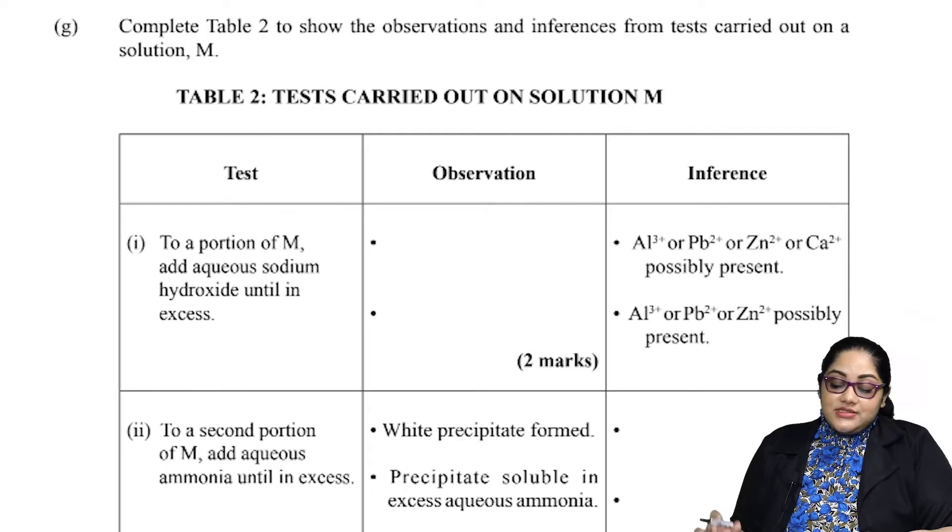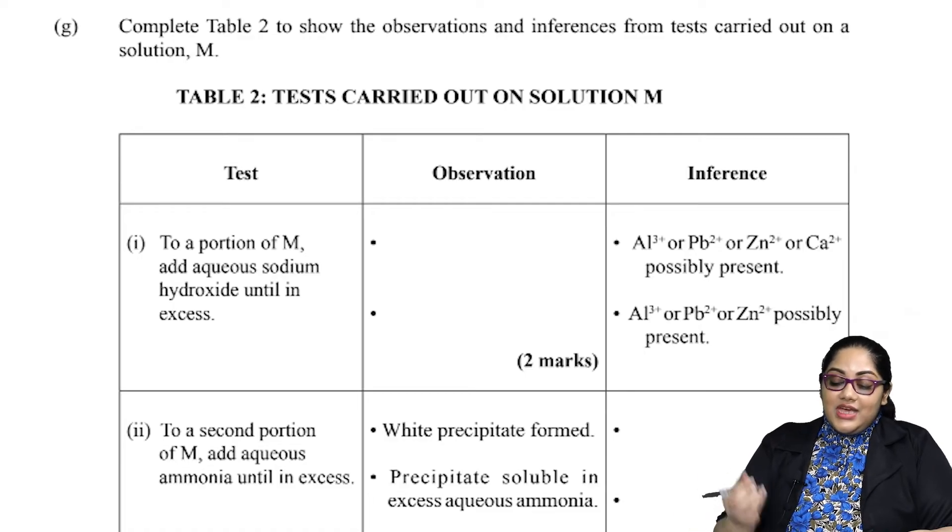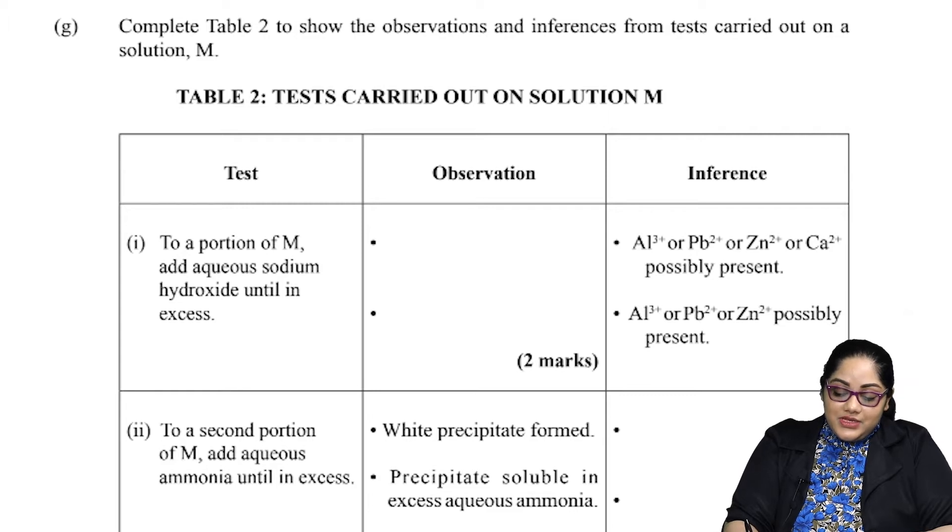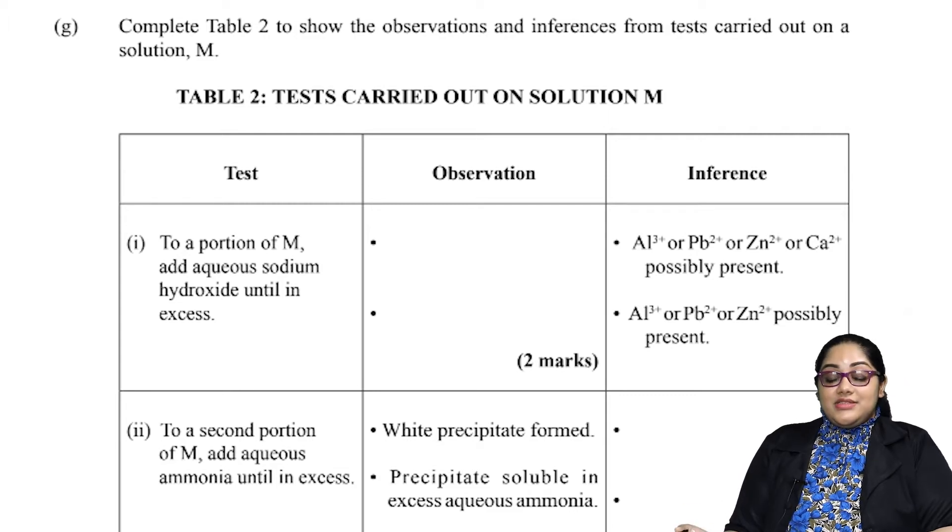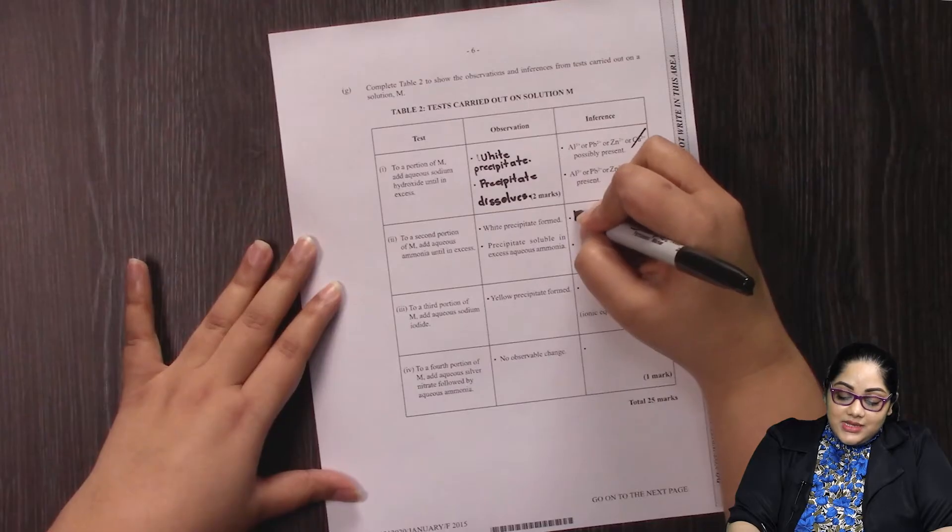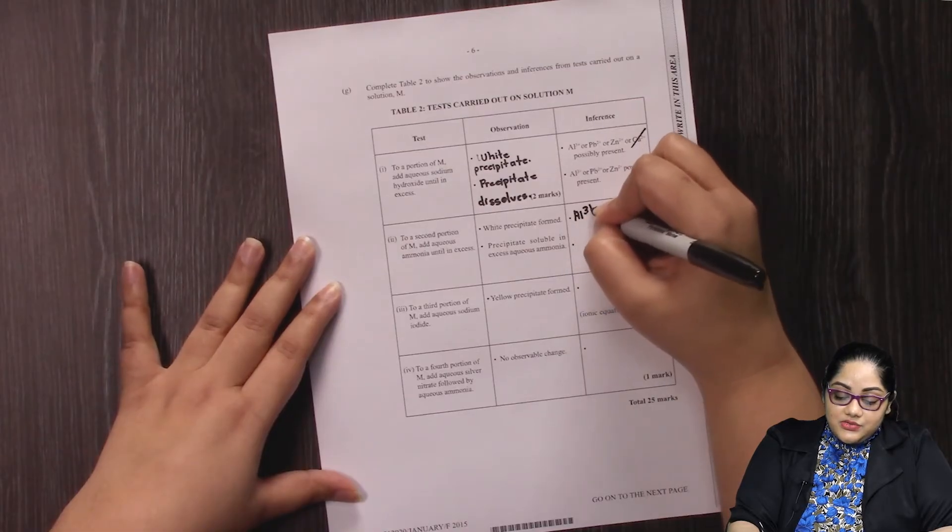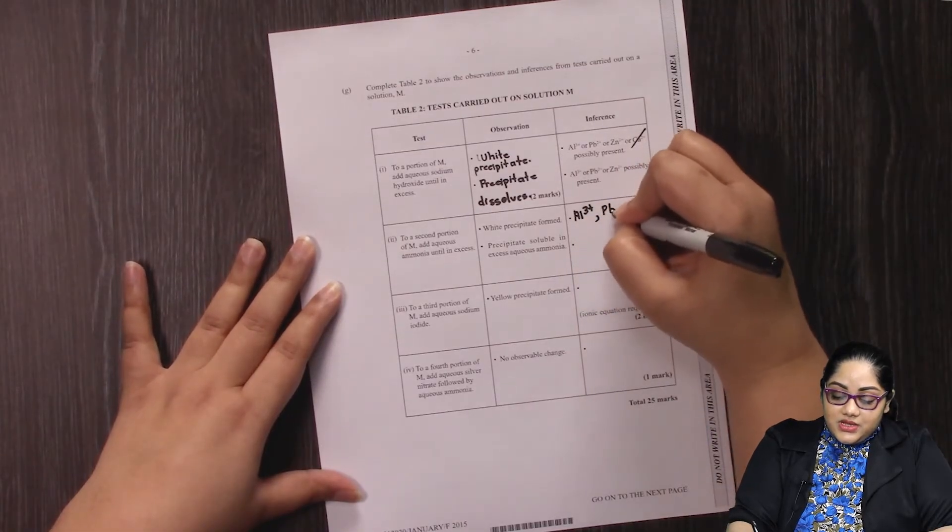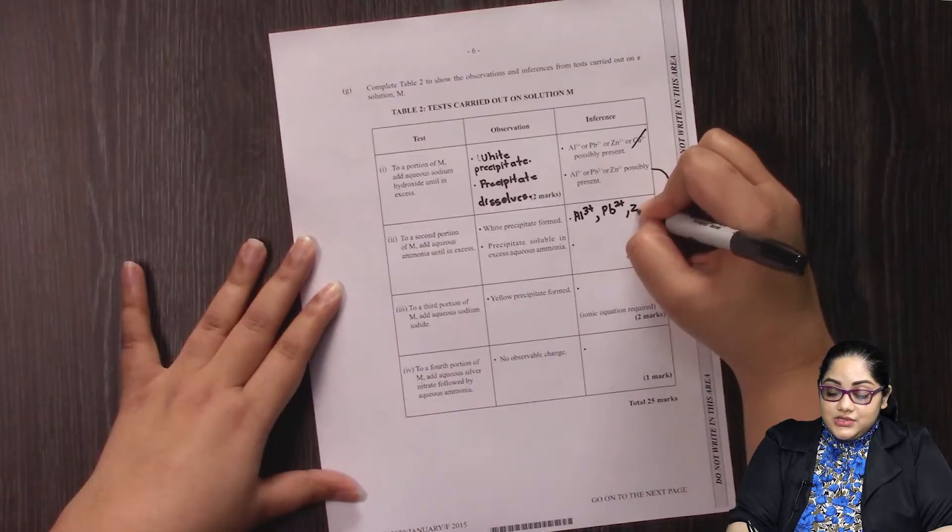In part 2, the second portion, we are adding aqueous ammonia until excess. In the first part, we are observing a white precipitate being formed. That white precipitate is just confirming the second inference that we have. So we have the same ions: Al3+, Pb2+, and Zn2+.